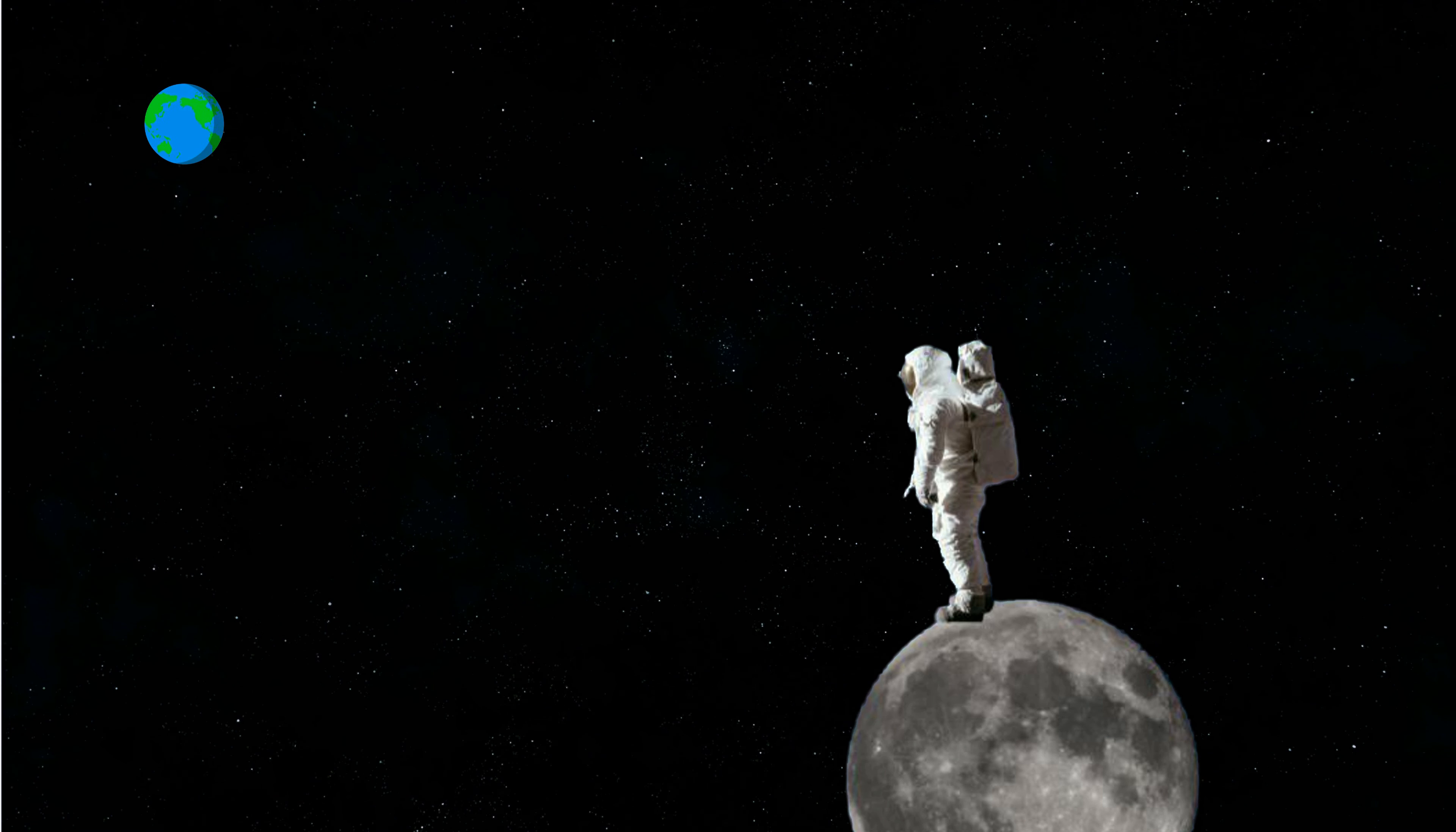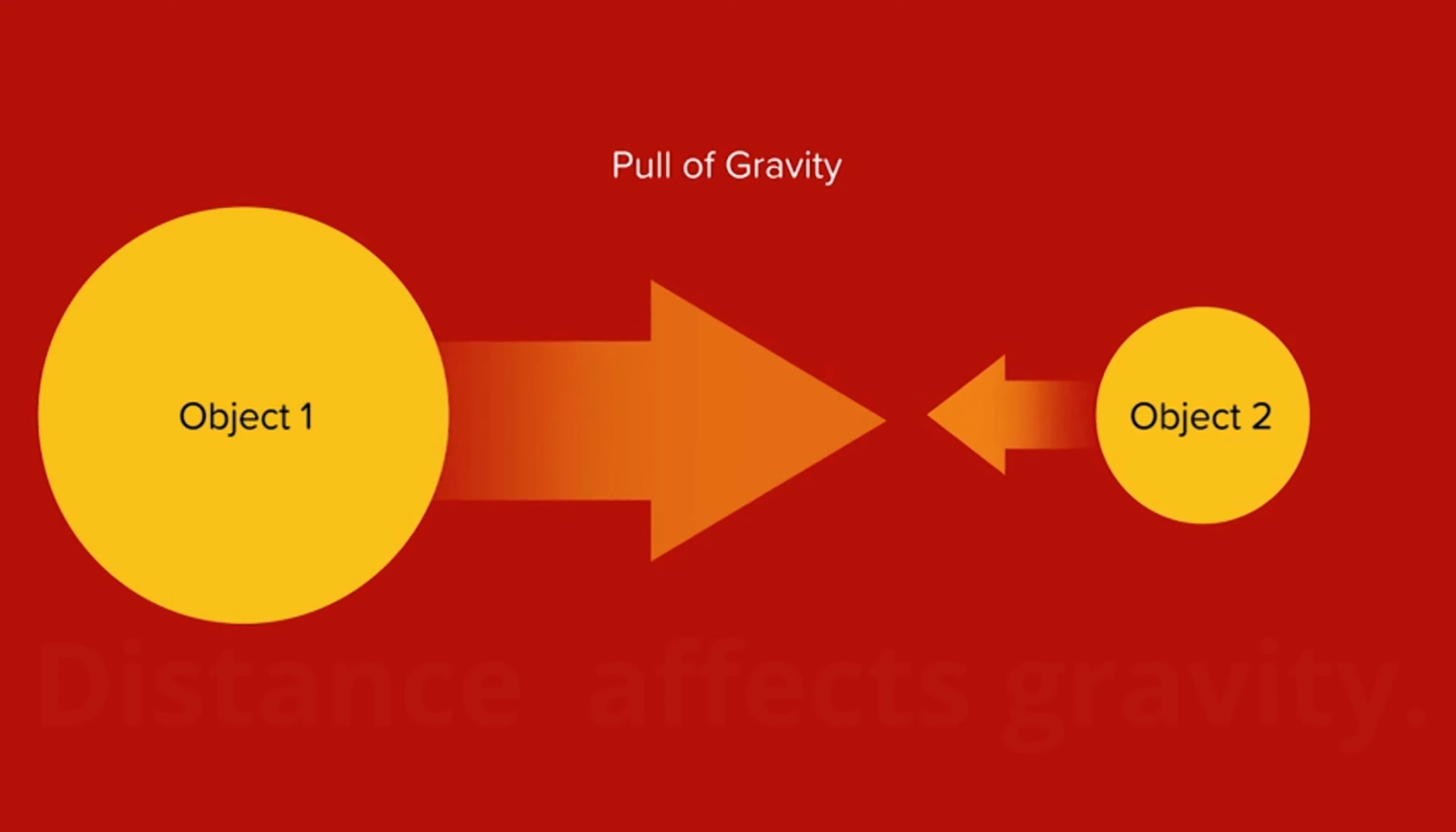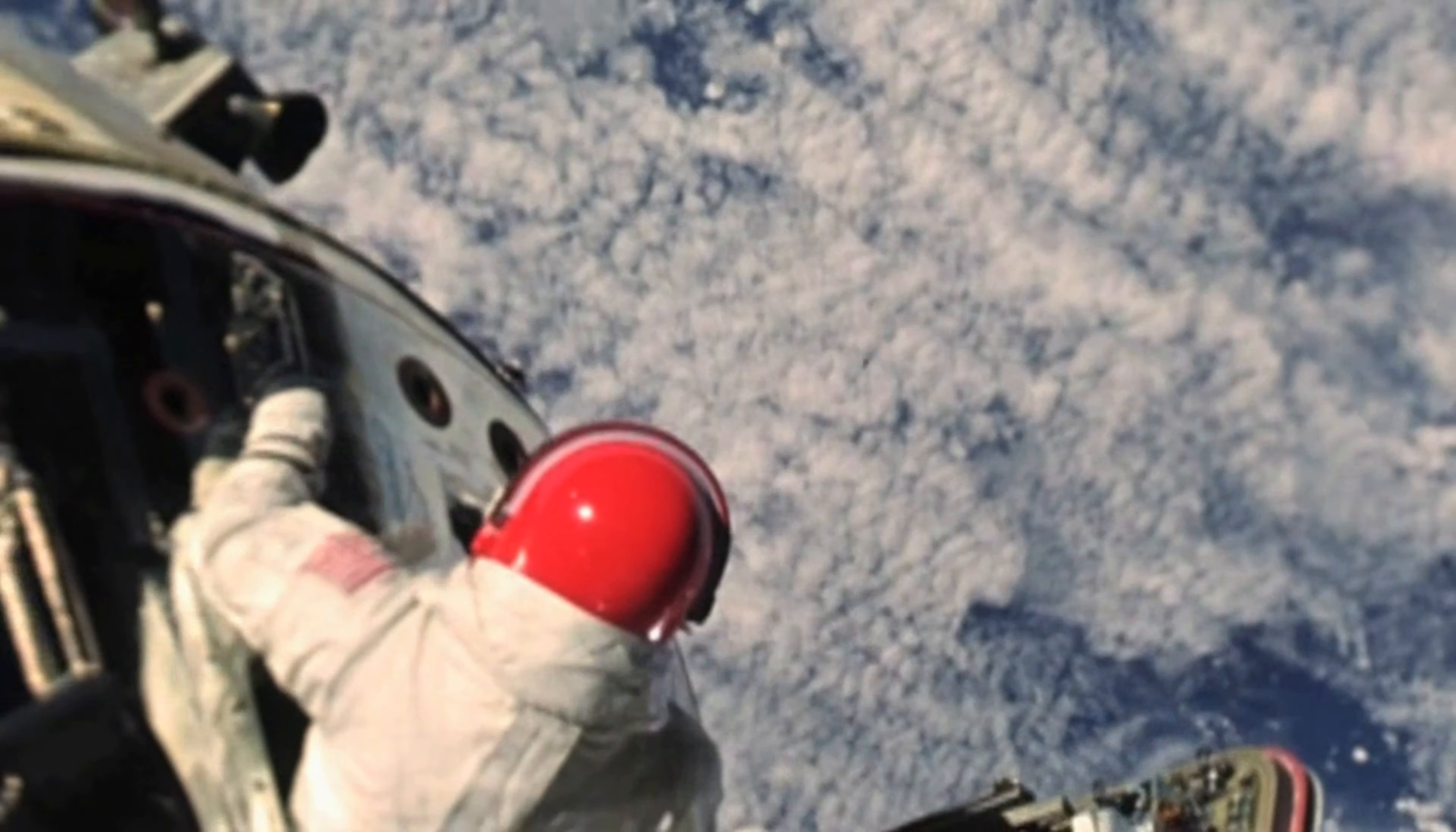But the astronaut doesn't get pulled off the moon and back through space to earth. Earth still has a larger mass than the moon and it still has a larger gravitational pull than the moon, but because the astronaut is far away from earth and very close to the moon, the gravitational pull of the moon has the most effect and it keeps the astronaut on the moon. That's another important thing to know about gravity: the distance between two objects affects the gravitational pull between them. Objects that are close to each other pull harder than objects that are farther away. The effect of an object's gravitational pull lessens as you get farther away from it.